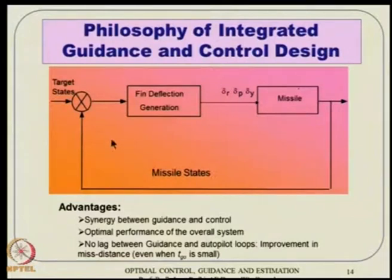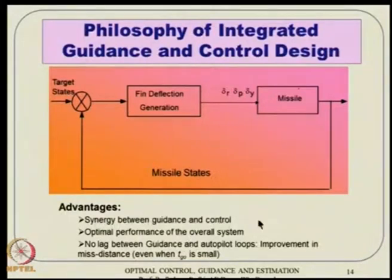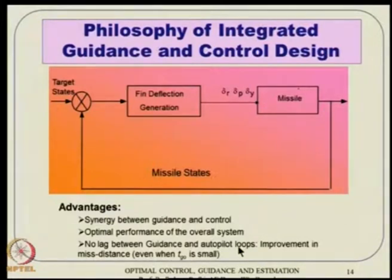People have thought about putting everything together in an IGC sense — just one loop where every information is contained: target information, missile information. Simply do the math and generate the fin deflection directly. This line of thought leads to the idea that it results in some big advantages: synergy between guidance and control, optimal performance of the overall system since there is no point mass equation anymore.